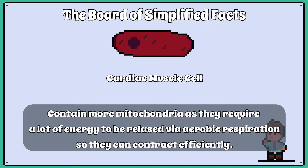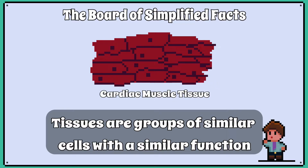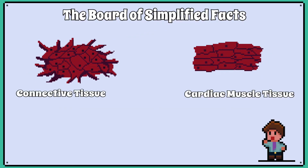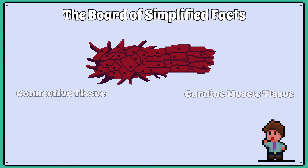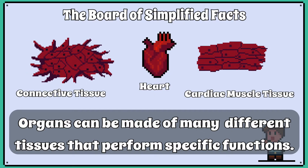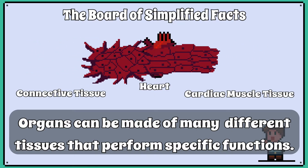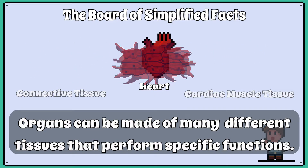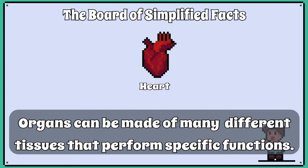Let's take a specialised cardiac muscle cell. When you have a collection of these, they form a tissue. Tissues are groups of similar cells with a similar function. Then, with other tissues, they form an organ — in this case, it is the heart. Organs can be made of many tissues that perform specific functions. The heart needs many different types of connective and muscle tissues working together so that the heart can act as a pump.